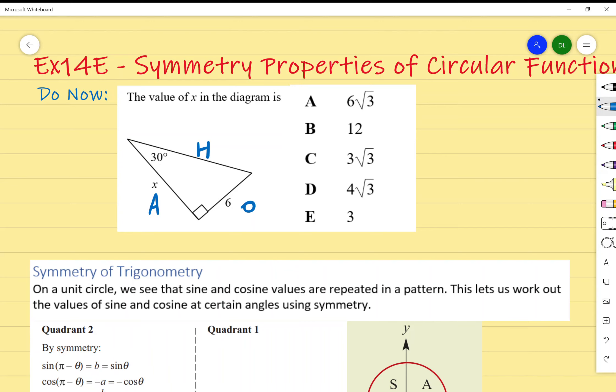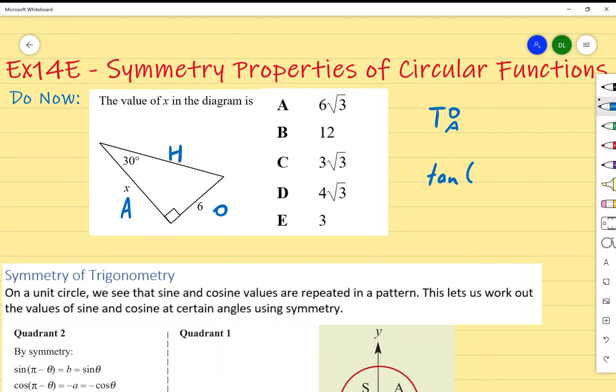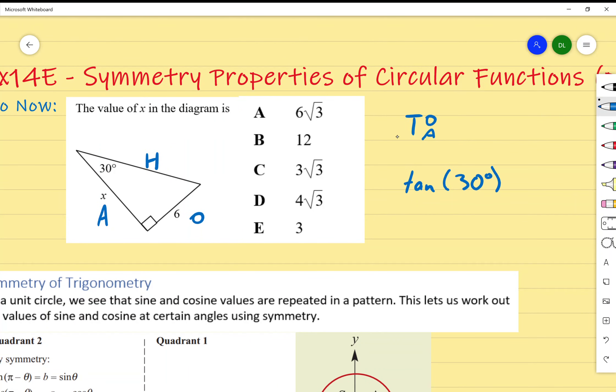I'm going to be using A and O, so I'm using TOA. I end up with tan of 30 degrees equals O over A, which is 6 over x. You could solve this in the calculator, but I'm going to multiply both sides by x, so x tan 30 degrees equals 6. Then divide both sides by tan 30, which gives x equals 6 over tan 30 degrees.